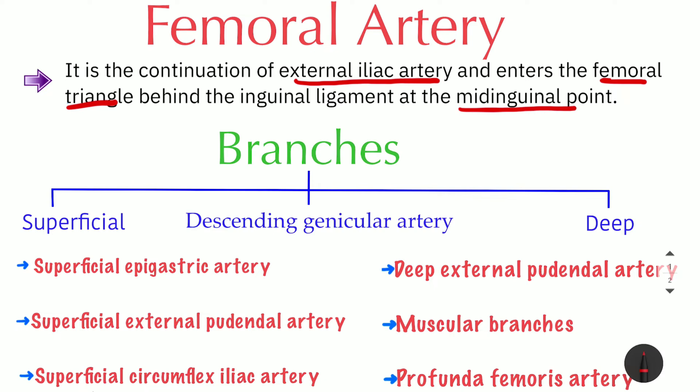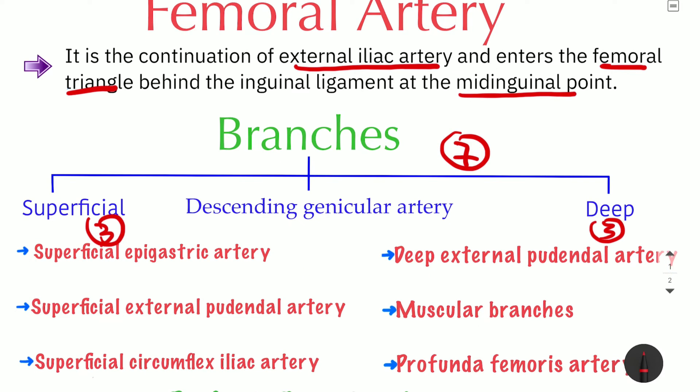Now let's talk about the branches of the femoral artery. We have a total of seven branches: three superficial branches, three deep branches, and one which is the descending genicular artery.